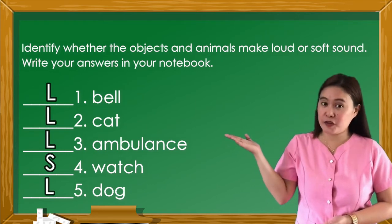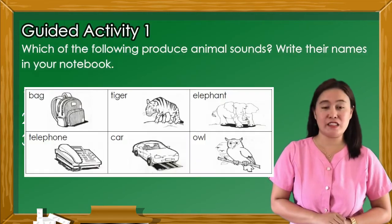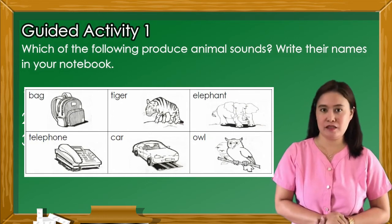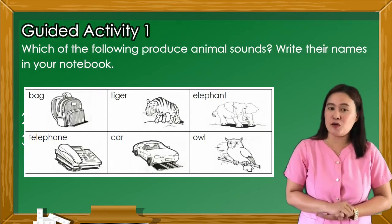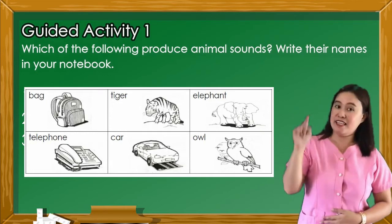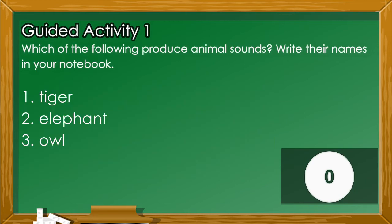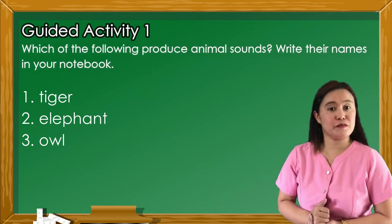Now, did you get all of these correct answers? If you do, that's great! Now, let's move on to guided activity one. Which of the following produce animal sounds? Write their names in your notebook. Now, we'll give you 10 seconds to answer. Now, did you get all of these correct answers? If you do, that's great!